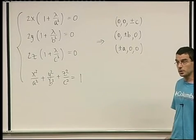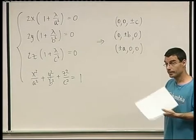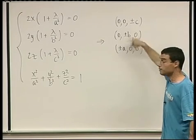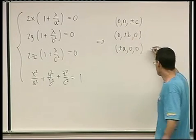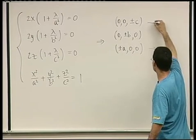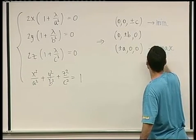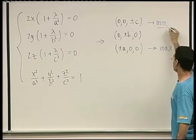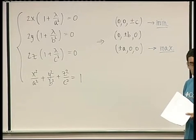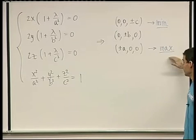f = x² + y² + z². Which is the maximum? At (±a, 0, 0), f = a²; at (0, ±b, 0), f = b²; at (0, 0, ±c), f = c². Since a > b > c, the points (±a, 0, 0) give the maximum, and the points (0, 0, ±c) give the minimum. The points (0, ±b, 0) are neither maximum nor minimum.